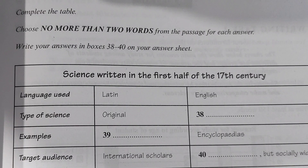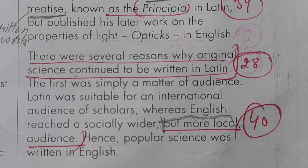Next is target audience. Latin ki target audience thi international scholars, English ke likhne hain. There were several reasons why original science continued to be written in Latin. The first was simply a matter of audience — Latin was suitable for an international audience of scholars, whereas English reached a socially wider but more local audience. Toh iska answer 'more local' hoga.